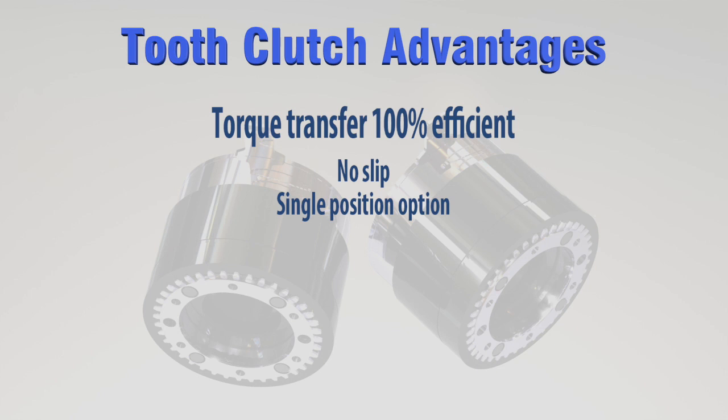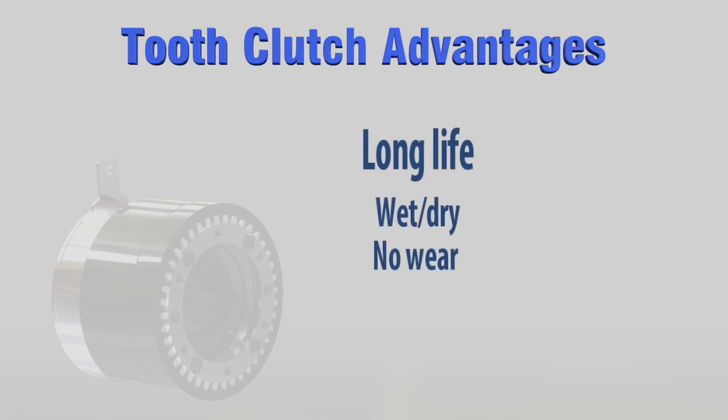When teeth are locked in place, there is minimal backlash. Tooth clutches can operate either dry or in oil bath like a gearbox or transmission.